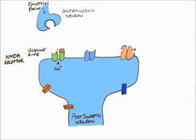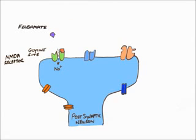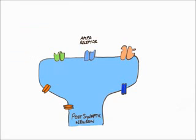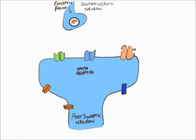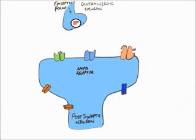The NMDA receptor also contains a glycine site, to which the anti-epileptic felbamate binds. The binding of felbamate to the glycine site closes the ion channel, stopping sodium from entering. The end result is that the action potential from the epileptic focus is not propagated, avoiding a seizure.